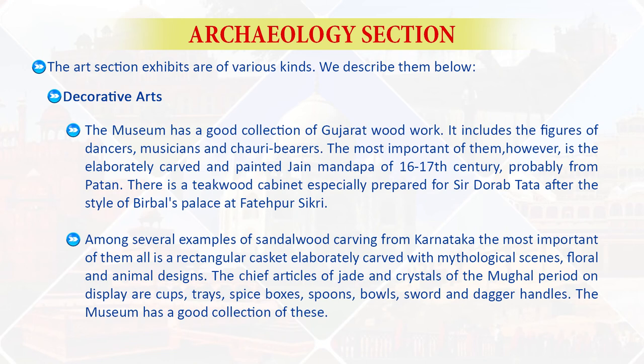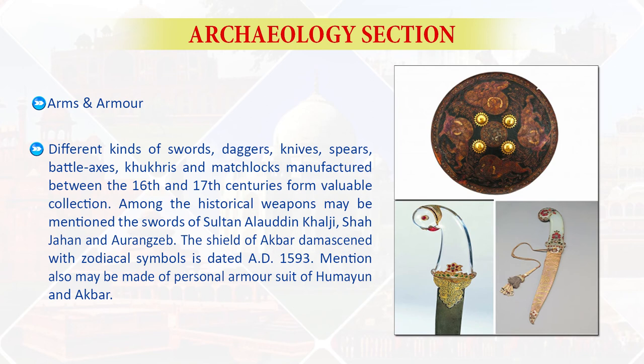Next are arms and armors. Different kinds of swords, daggers, knives, spears, battle axes, and matchlocks manufactured between the 16th and 17th century form a valuable collection. Among the historical weapons are the swords of Sultan Alauddin Khilji, Shah Jahan, and Aurangzeb. The shield of Akbar, inlaid with zodiacal symbols, is dated 1593 AD. Mention may also be made of the personal armor suits of Humayun and Akbar.